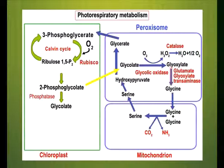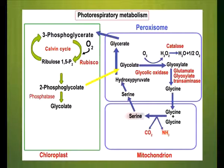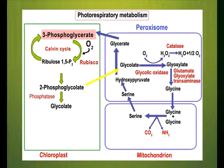The glyoxylic acid is then converted into the amino acid glycine by a transamination reaction catalyzed by the enzyme glutamate-glyoxylate transaminase. The glycine is transported out of the peroxisomes into mitochondria, where two molecules of glycine interact to form one molecule of serine with carbon dioxide and ammonia as byproducts. The amino acid serine returns to the peroxisome, where it is deaminated and reduced to hydroxypyruvic acid and finally to glyceric acid. The glyceric acid enters the chloroplast where it is phosphorylated to 3-phosphoglyceric acid, which enters into the Calvin (C3) cycle.